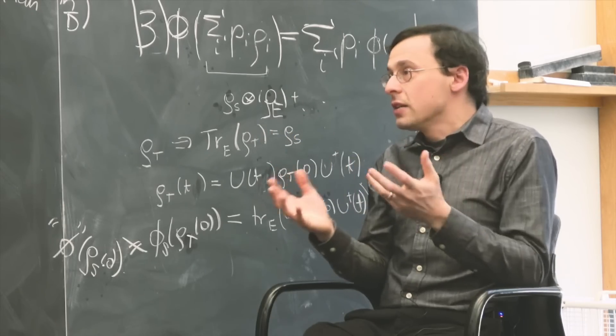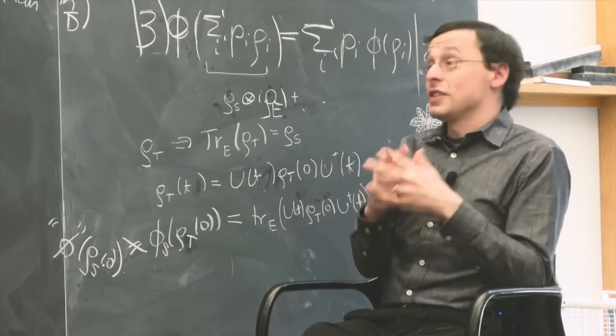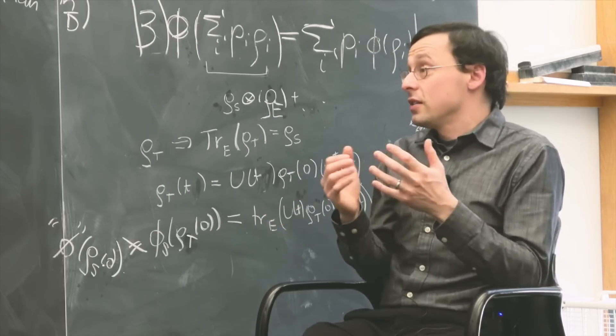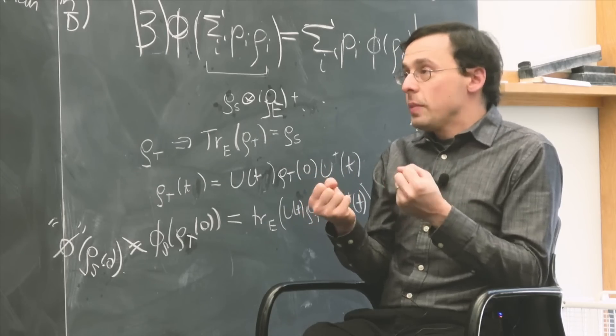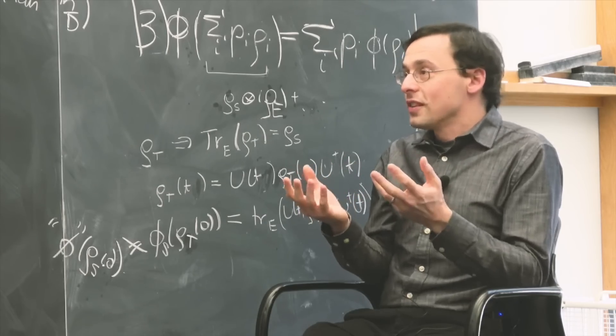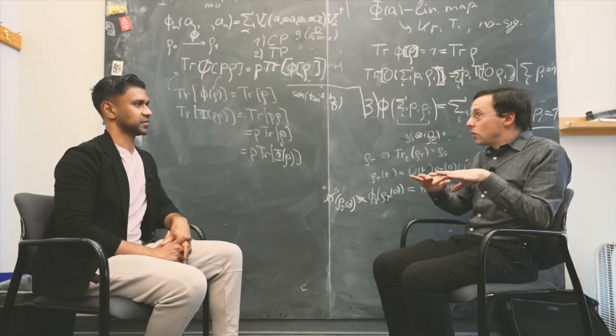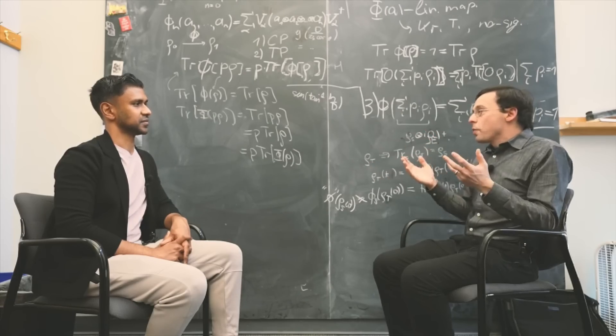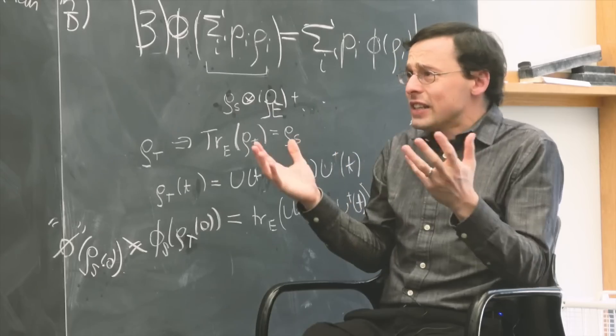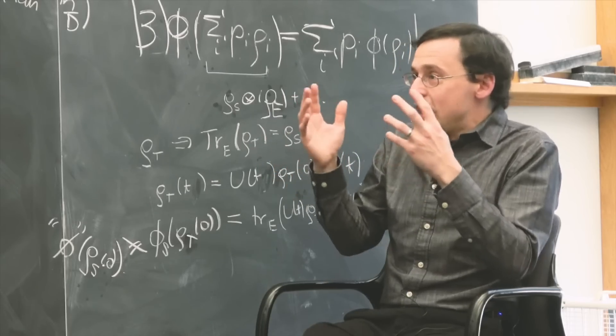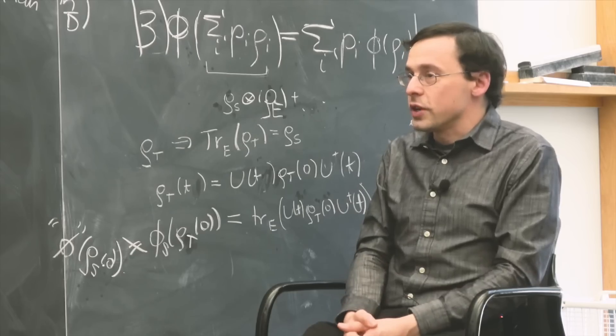Our leading physical model for the universe, at least for the non-gravitational parts, is the standard model, which is based on a set of models known as quantum field theories. And in quantum field theories, particles are emergent excitations of these sort of delocalized entities called quantum fields. And the number of particles can change from moment to moment. It's not always well-defined. So it's not even clear how to think about wave functions that live in anything like physical space in the universe as we know it.